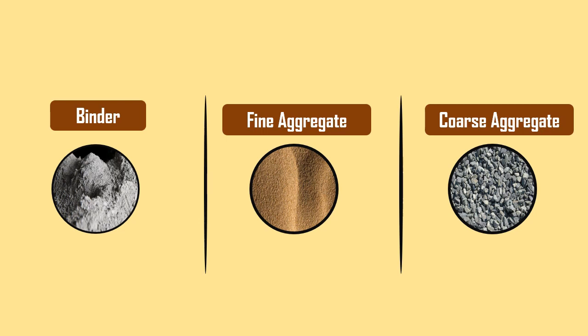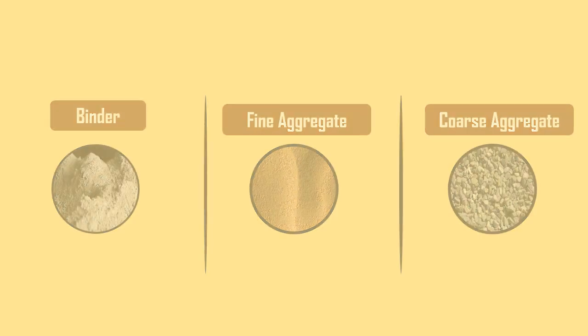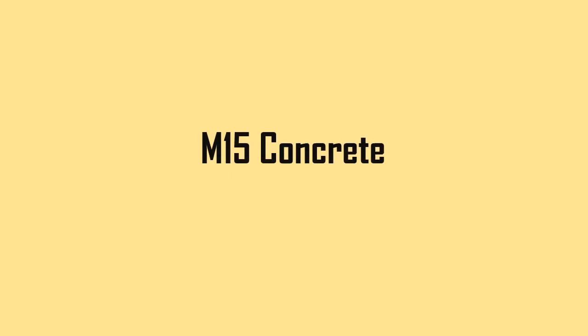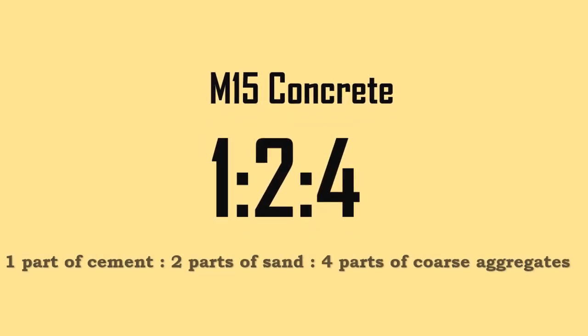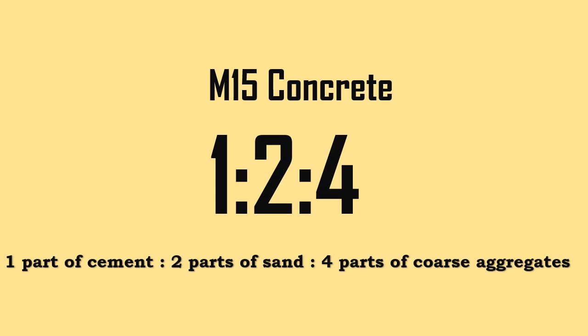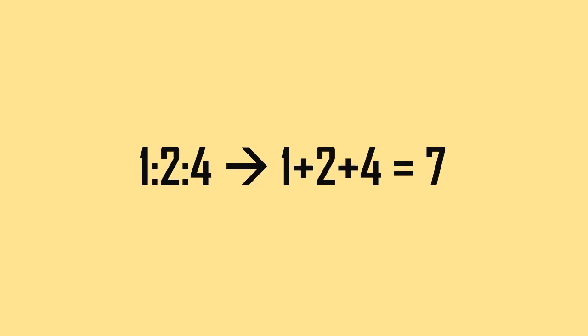Now let us calculate the quantities. Generally, the mix ratio will be specified in construction documents. For example, for M15 concrete, the ratio will be 1:2:4 — that is, one part of cement, two parts of fine aggregate, and four parts of coarse aggregate. The total of the ratio is 1 + 2 + 4 = 7.